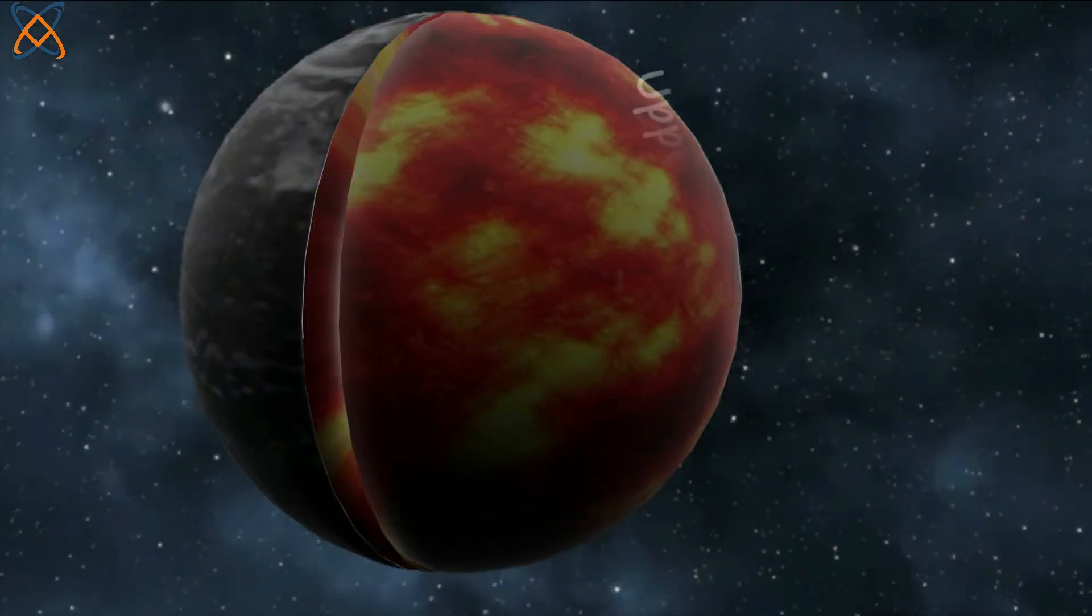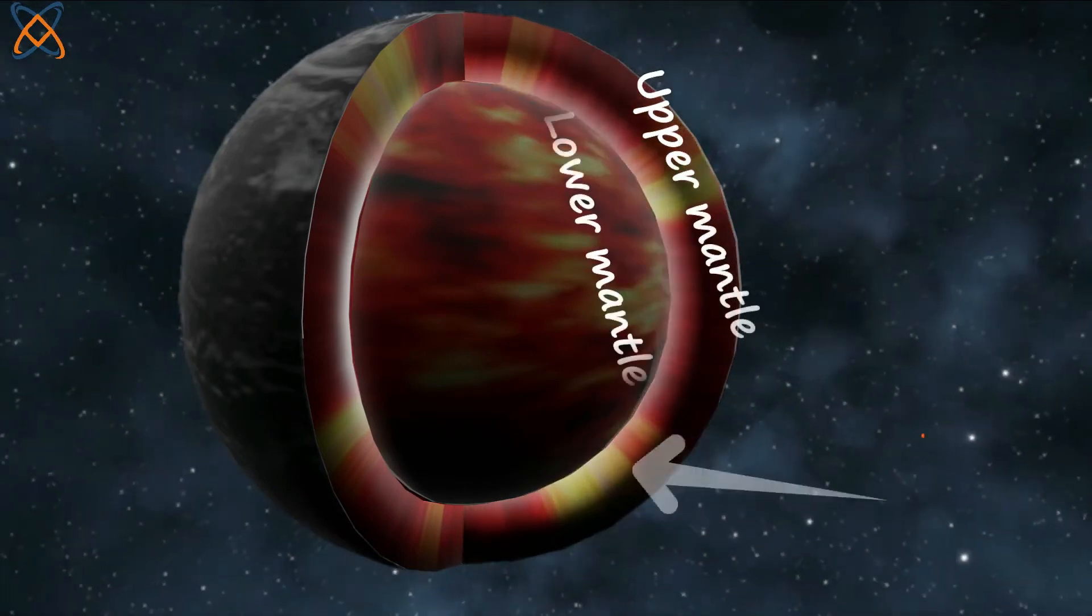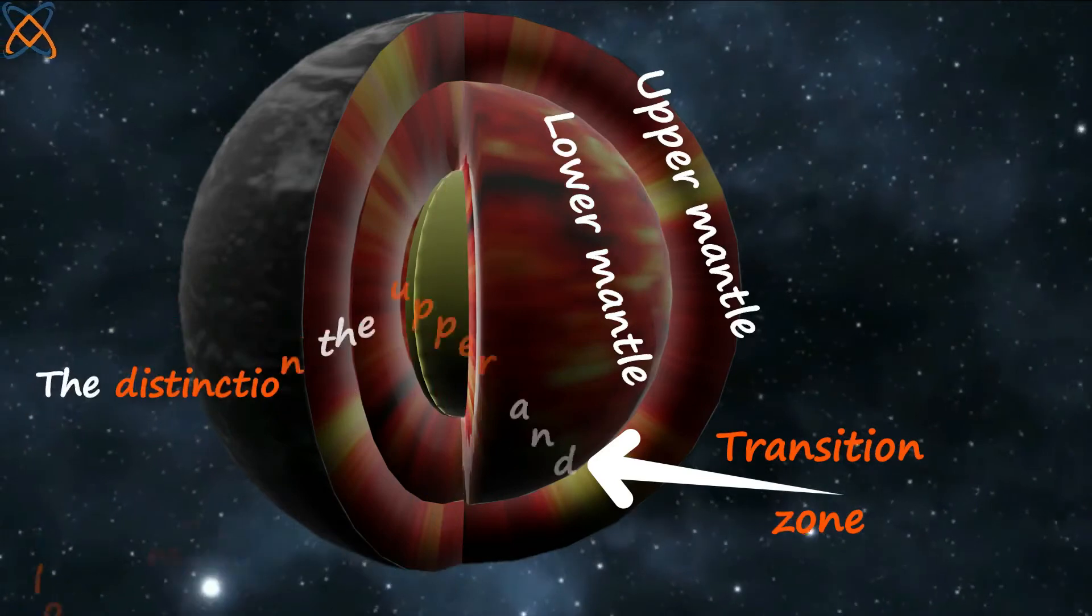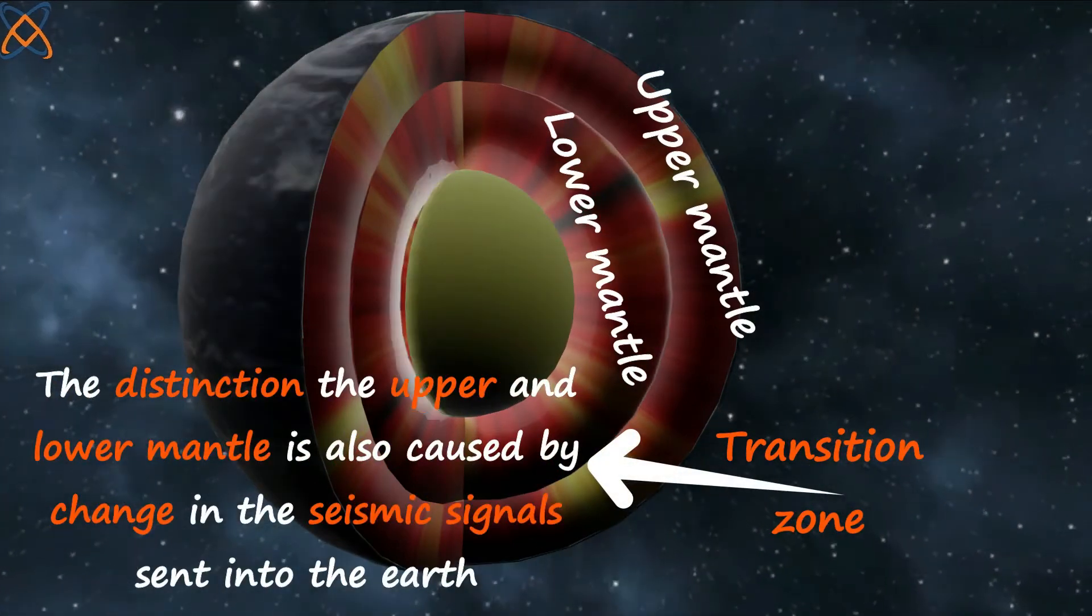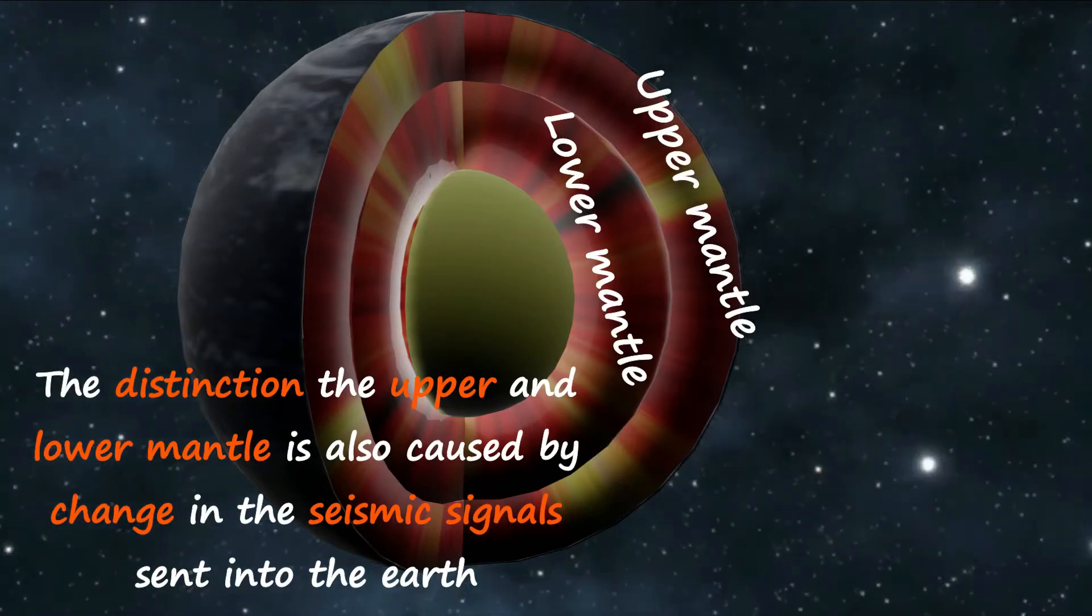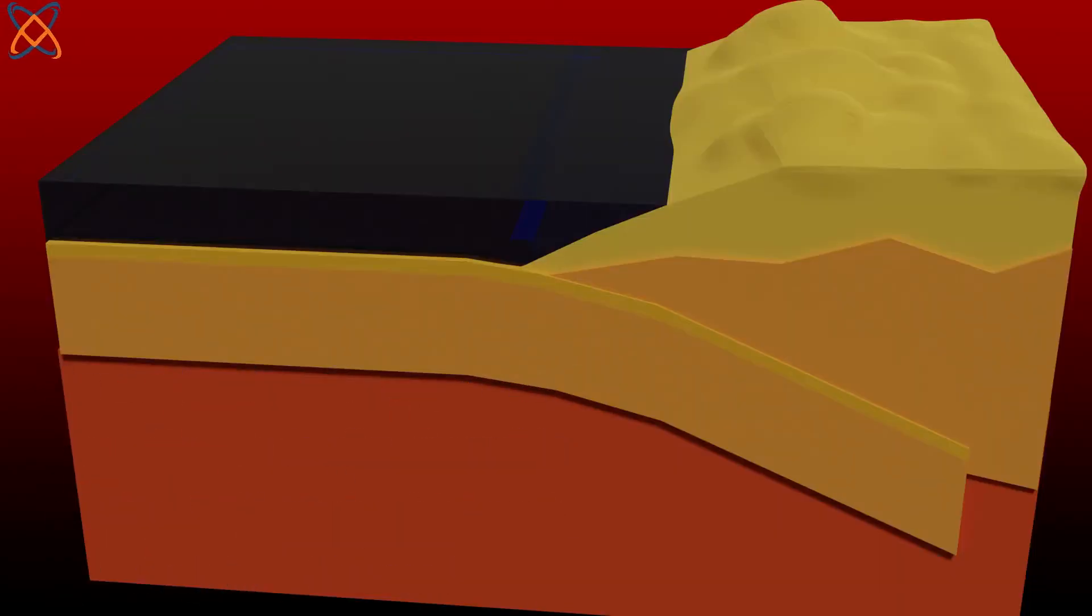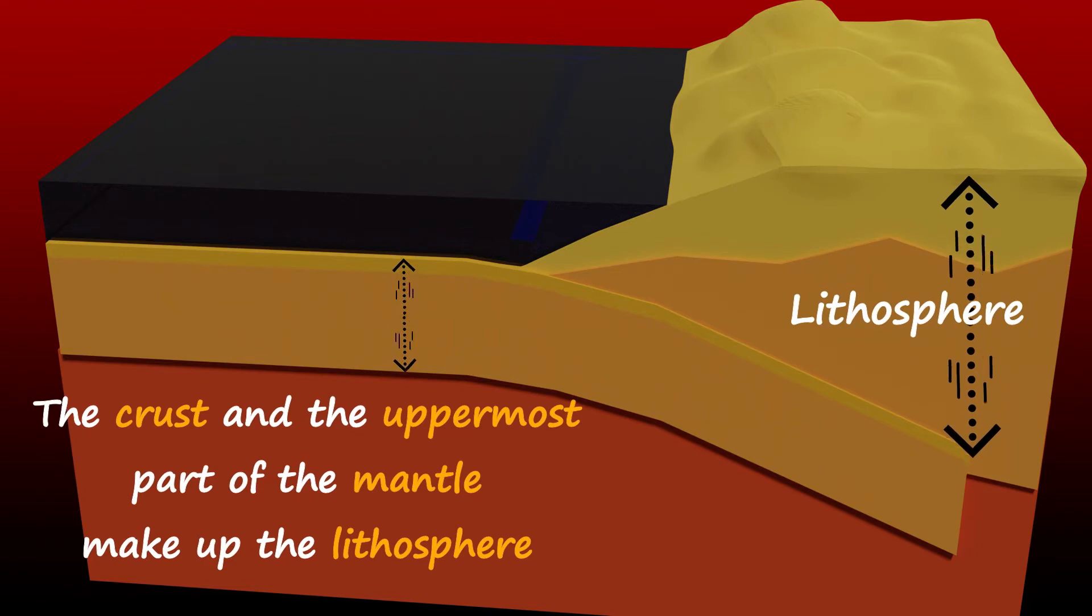The mantle is divided into the upper and the lower mantle, separated by a transition zone. The distinction between these two layers is also caused by change in seismic signals sent into the Earth. The crust and upper part of the mantle makes up the lithosphere, which is the rigid part of the Earth. We will discuss more about the mantle in another tutorial.